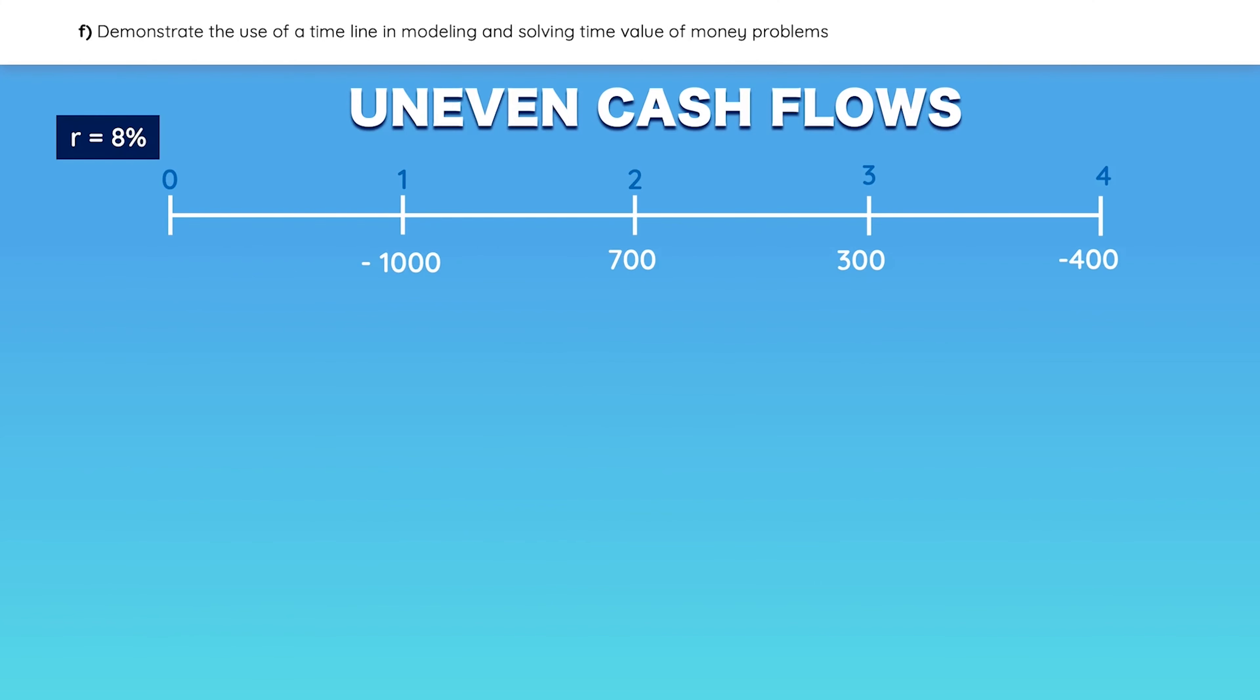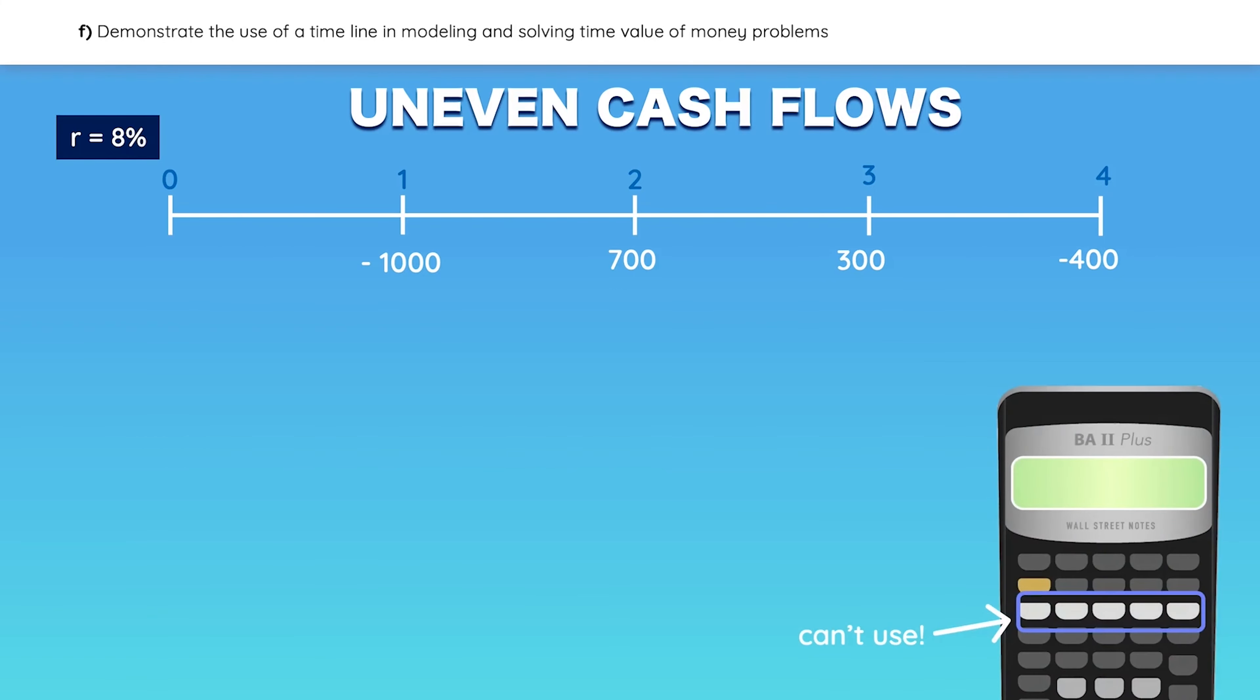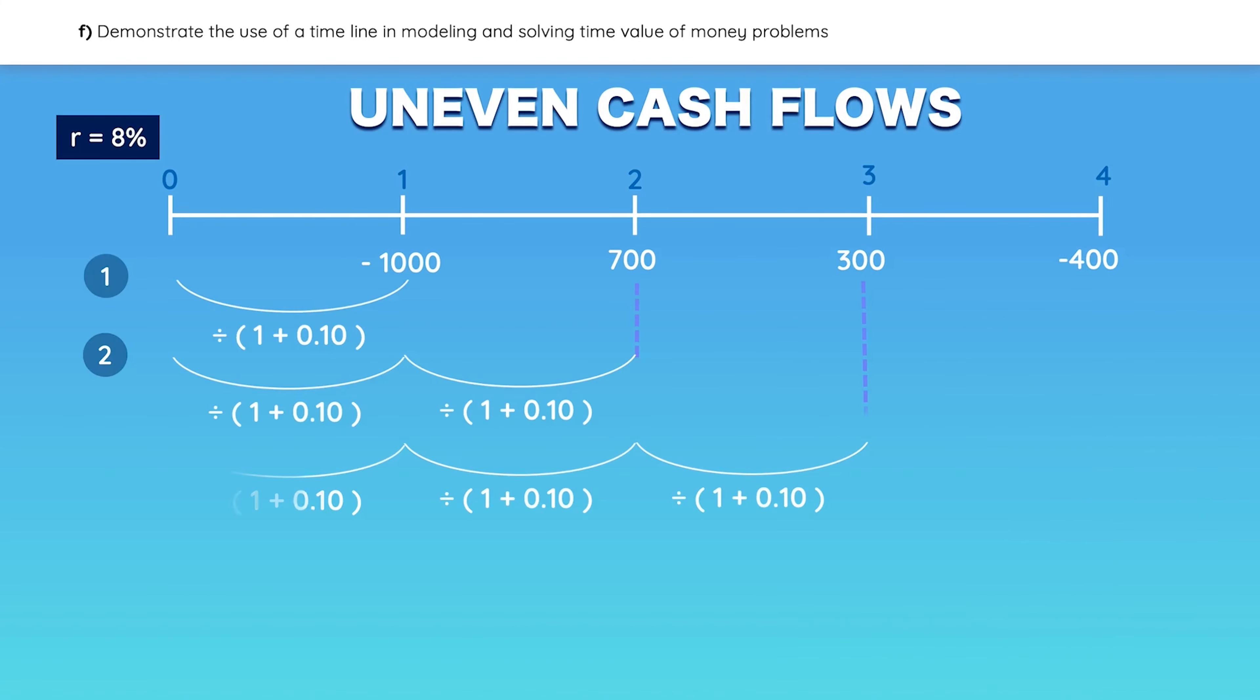Take a look at this stream of unequal cash flows. If you want to find the present value, you cannot use the time value of money buttons on the calculator because the payments aren't equal. You can find the present value one of two ways. The first is to discount every single cash flow individually and then get the sum of all the present values, but this wastes a lot of time.